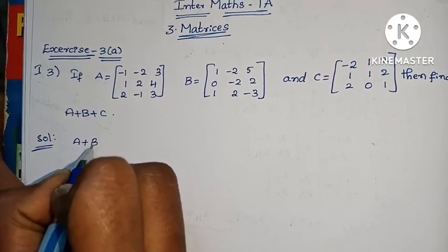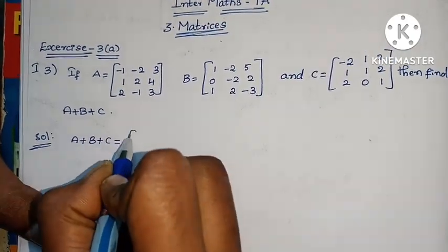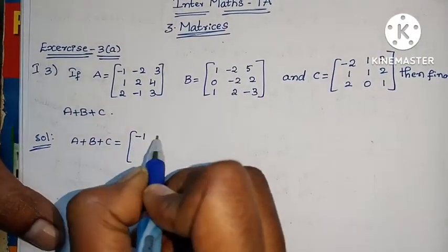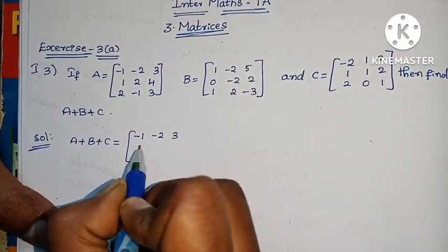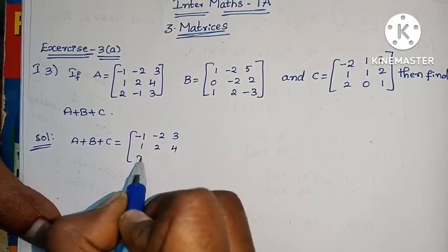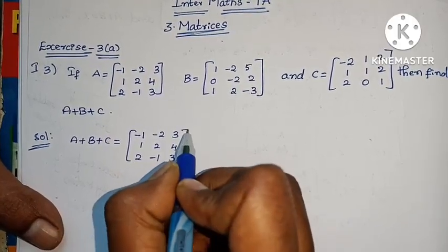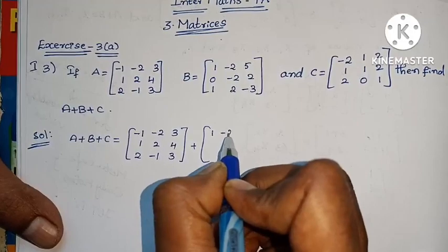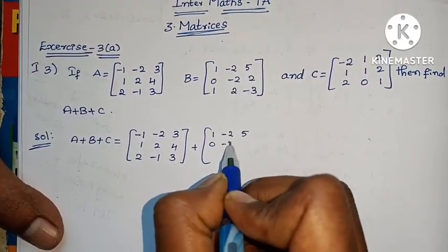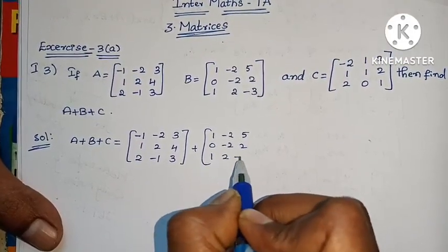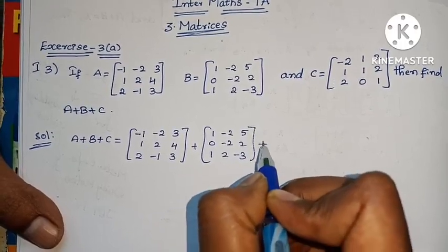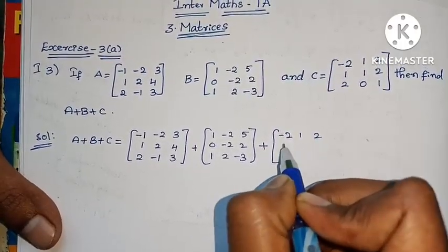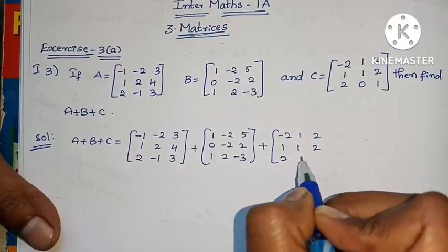A plus B plus C equals to — we add 3 matrices: minus 1, minus 2, 3, 1, 2, 4, 2, minus 1, 3 plus 1, minus 2, 5, 0, minus 2, 2, 1, 2, minus 3 plus minus 2, 1, 2, 1, 2, 2, 0, 1.